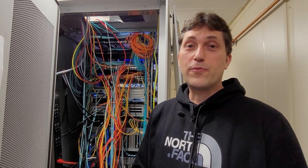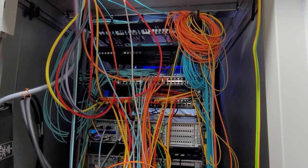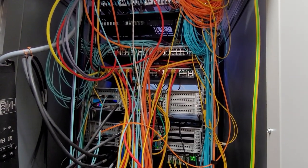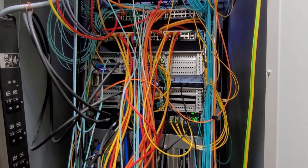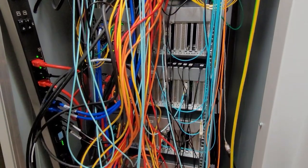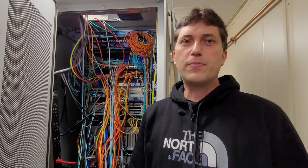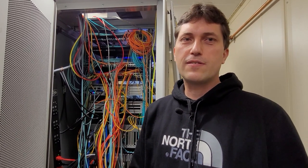You see here the prototype readout system of CBM in the rack. We have more than 400 optical fiber connections between the detector systems in the CBM cave and this readout system here. The data are injected into the entry nodes through PCI Express cards. They are pre-processed here and then transmitted for further processing to the green cube which is located 300 meters away.